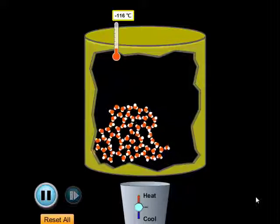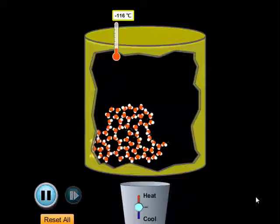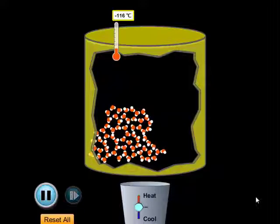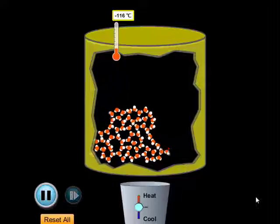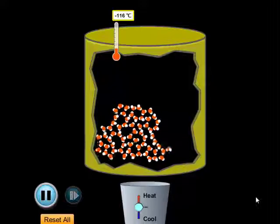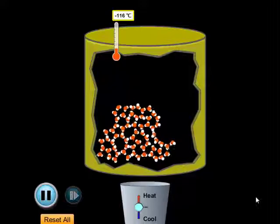Each molecule has two hydrogen atoms bonded to a red oxygen atom in a bent molecular shape. We see many water molecules very closely packed together moving in place but not moving away from the nearest neighbors.